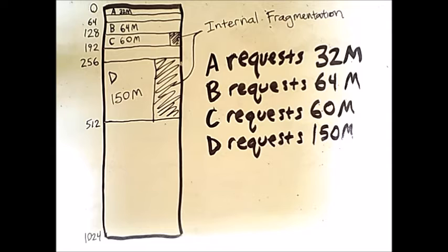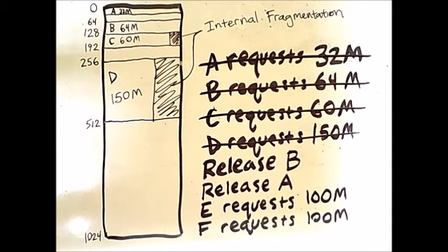Let's consider now what happens if some of these processes are released from memory before other new processes come in. Consider these new events. We will first release B from memory, then release process A, and then process two more requests.